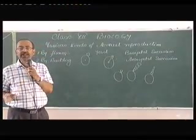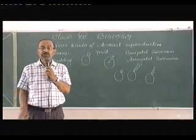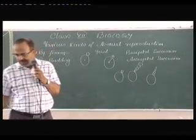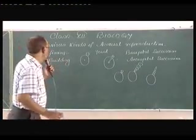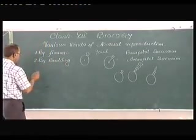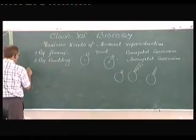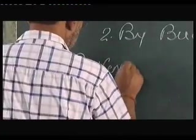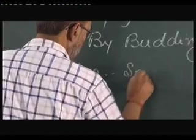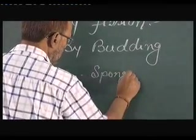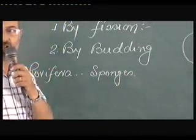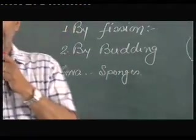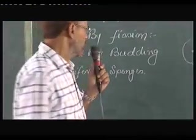A similar type of budding is found in certain members of animals also, like in the members of porifera, the family of sponges, where we find the formation of endogenous buds.